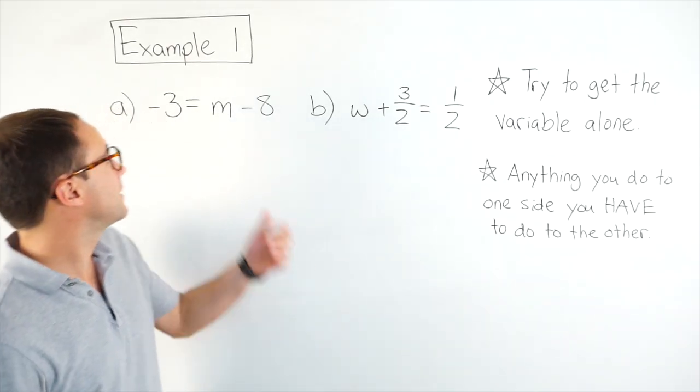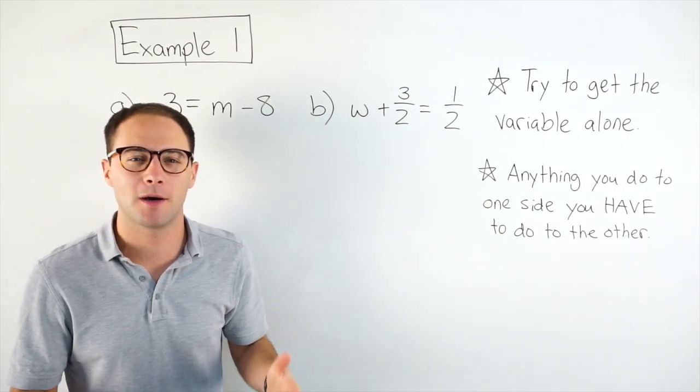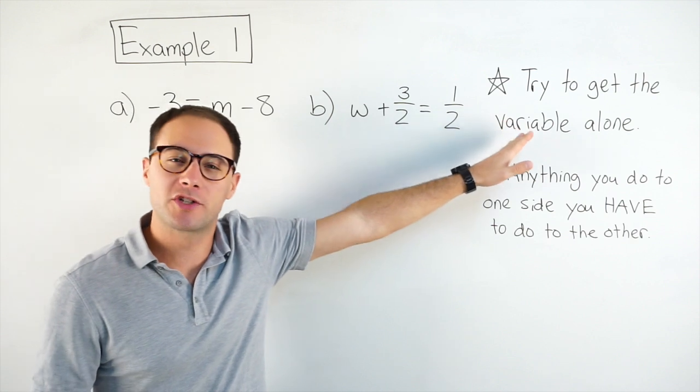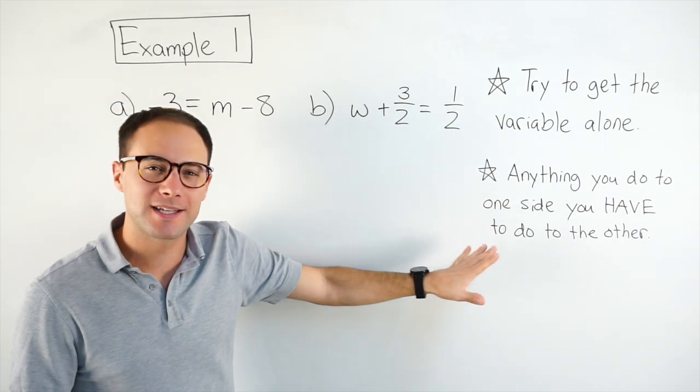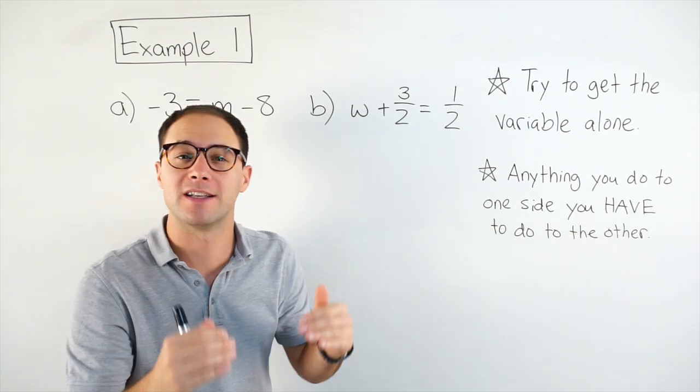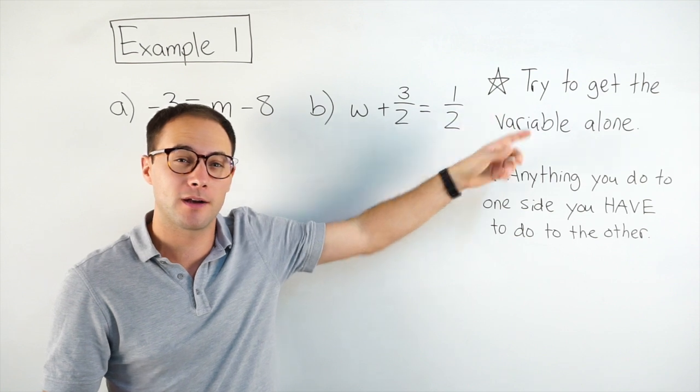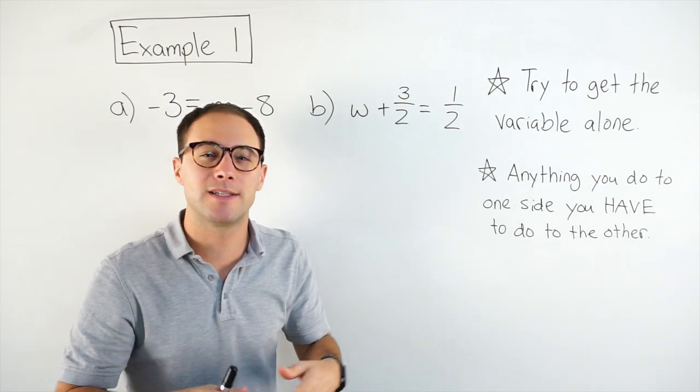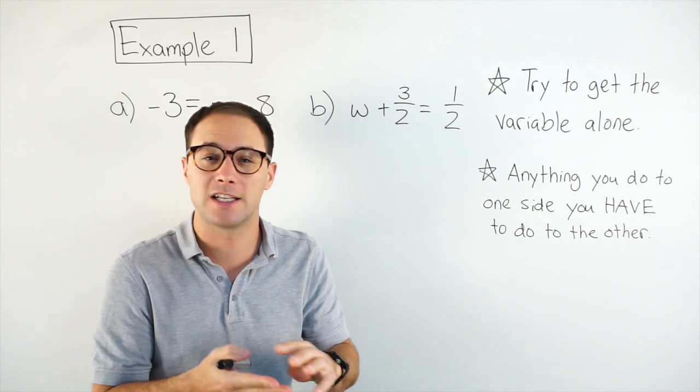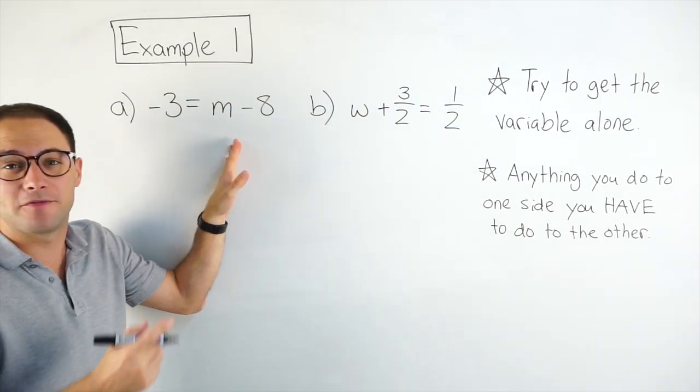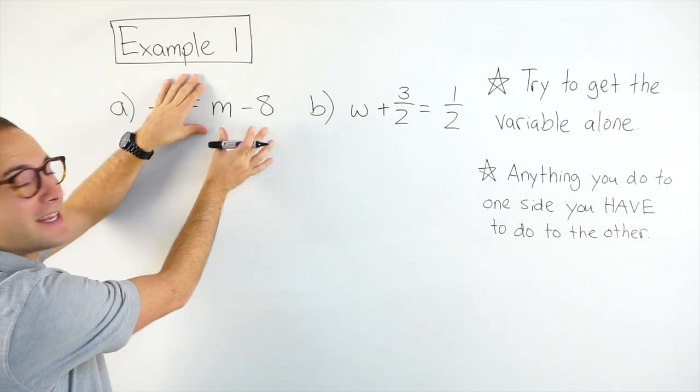Alright, let's get into our first example. Part A, negative 3 equals m minus 8. Now, just a quick reminder about solving equations. We're always trying to get the variable alone, that's our goal. And anything you do to one side, you have to do to the other side to make sure that it stays equivalent. Now, if this is your first time solving equations, check out this video up here. Those are going to show you the basics.